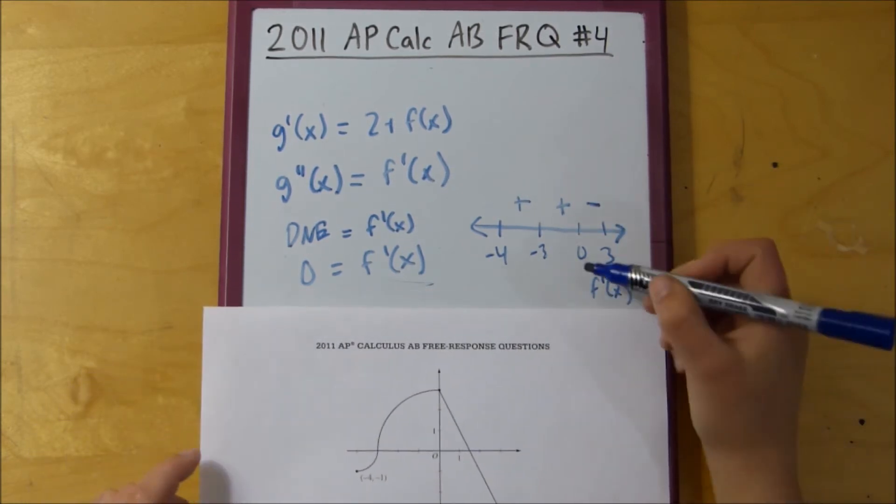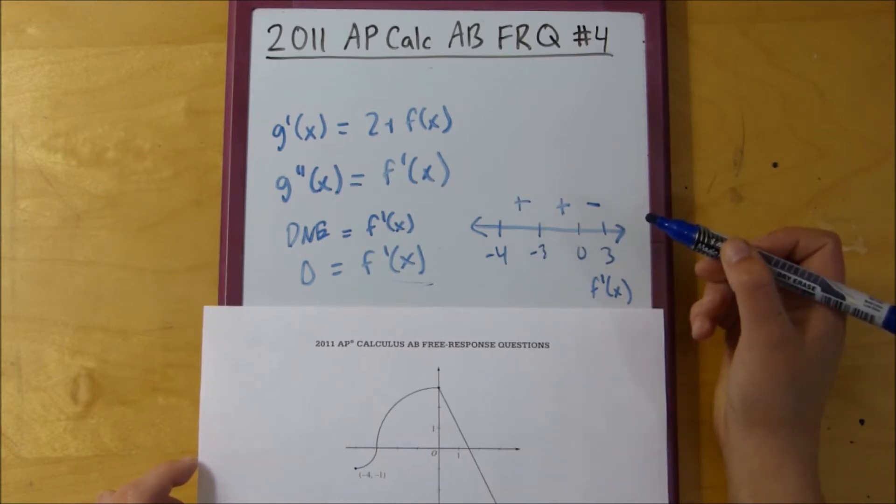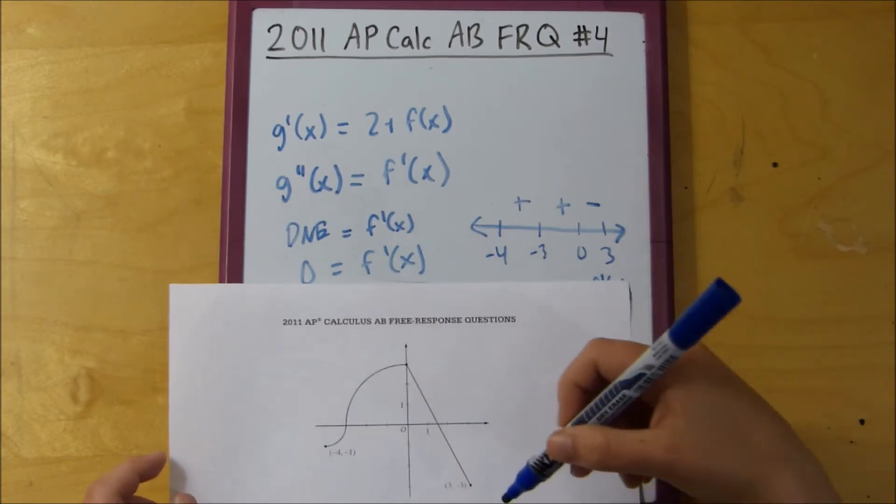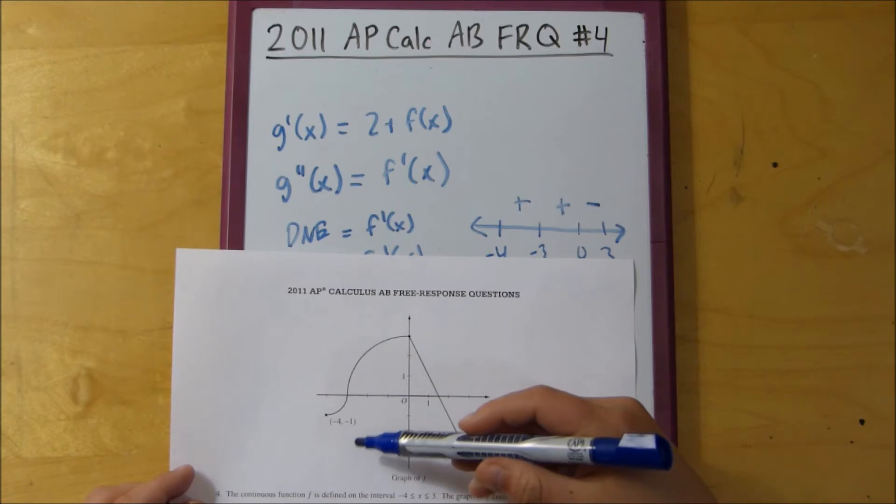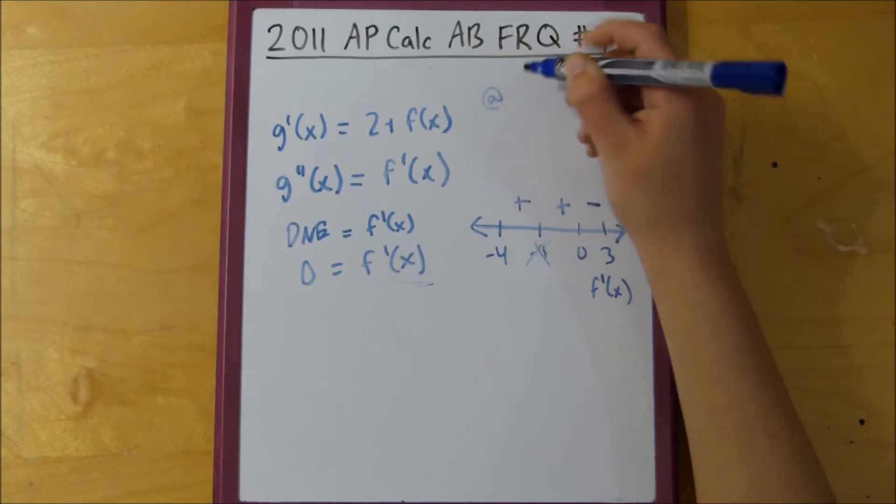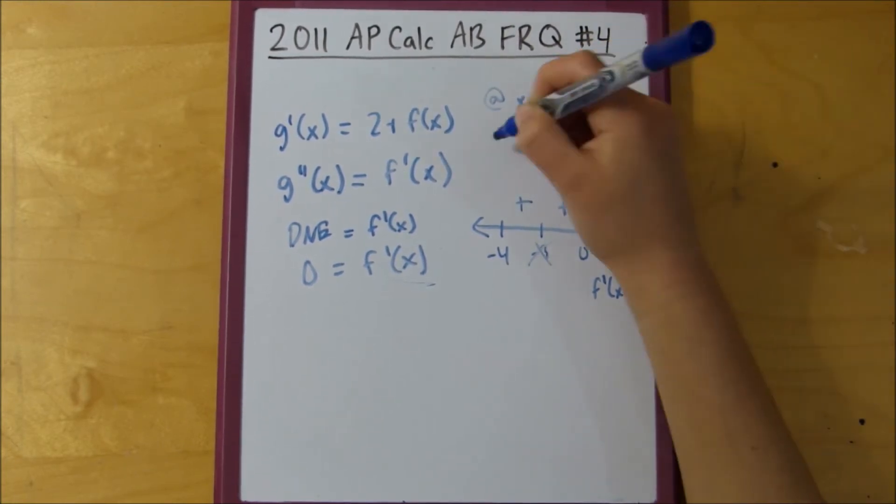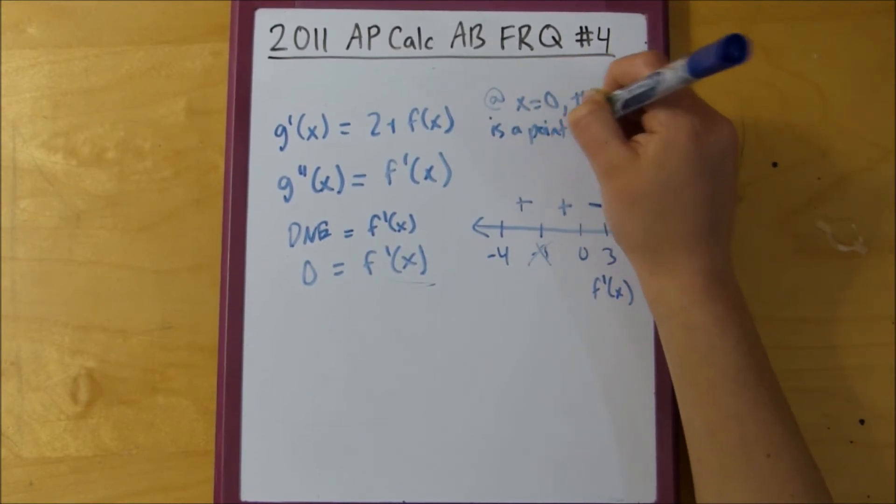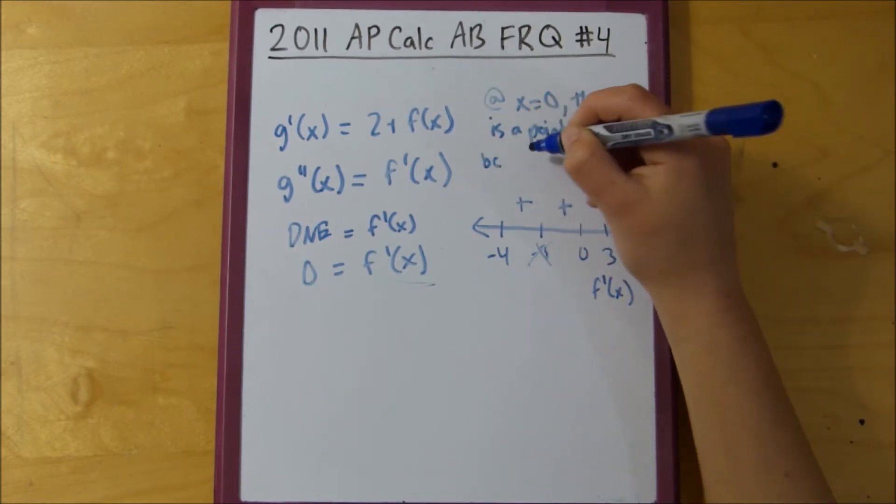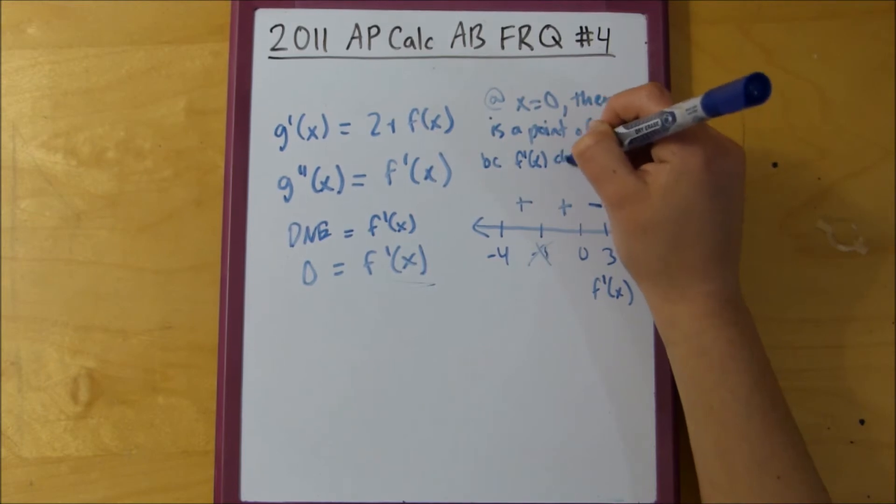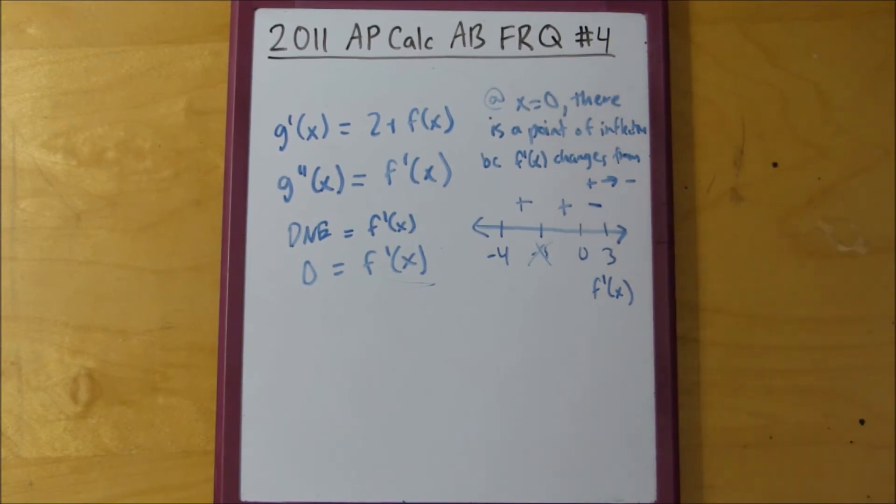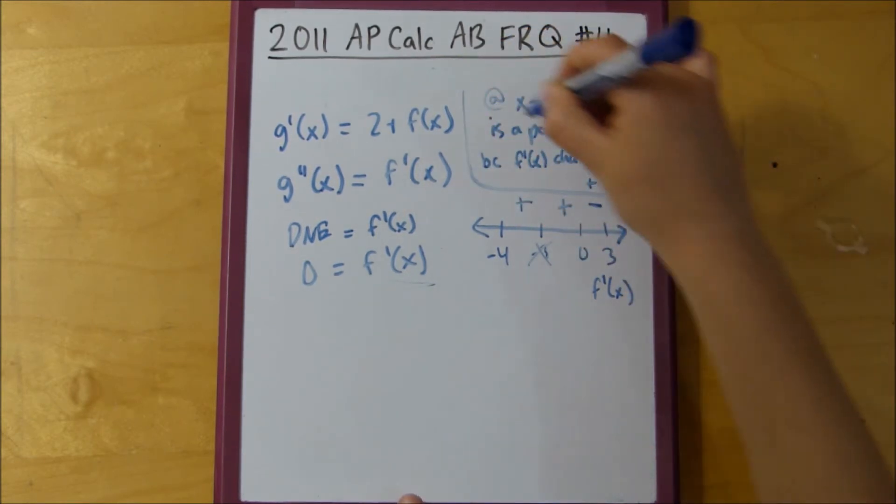So, that means that 0 is the only point of inflection. Negative 3 would be a point of inflection if the slope of f, the tangent line of f, had changed signs, but it didn't. So, this is not a point of inflection. So, at x equals 0, there is a point of inflection. Because, f prime of x changes from positive to negative. That would be our answer.